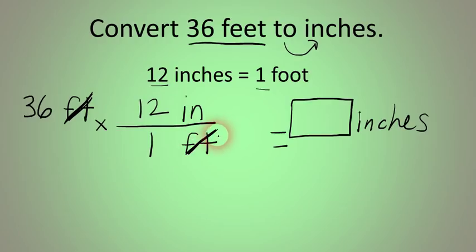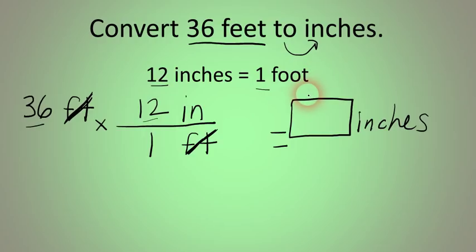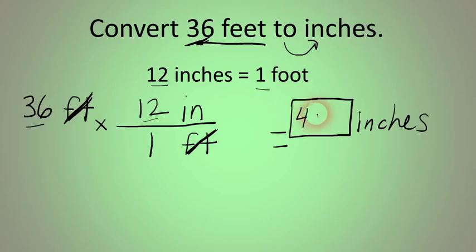Now we cancel feet top and bottom. It looks like we're going to multiply, so on your calculator you take 36 times 12 divided by 1. The answer is 432 inches. If you've learned about significant figures, we need to round to the correct number — however many significant figures are in your question is how many should be in your answer. This 36 has two significant figures, so we round 432 to about 430. We assume that 1 foot is exactly 12 inches, so those are exact numbers, and the answer is about 430.